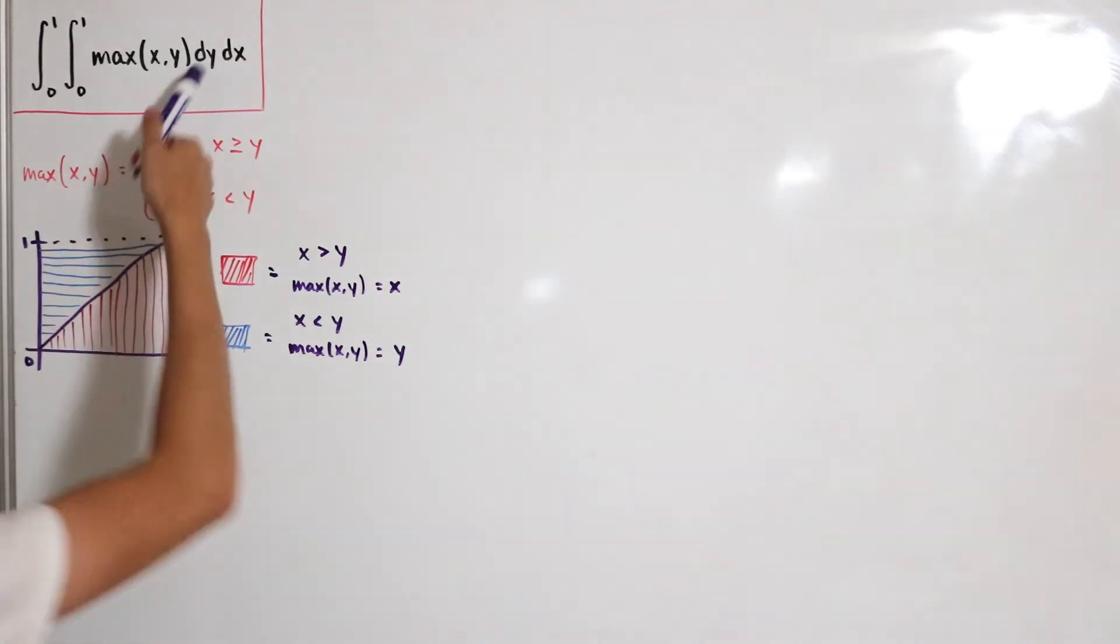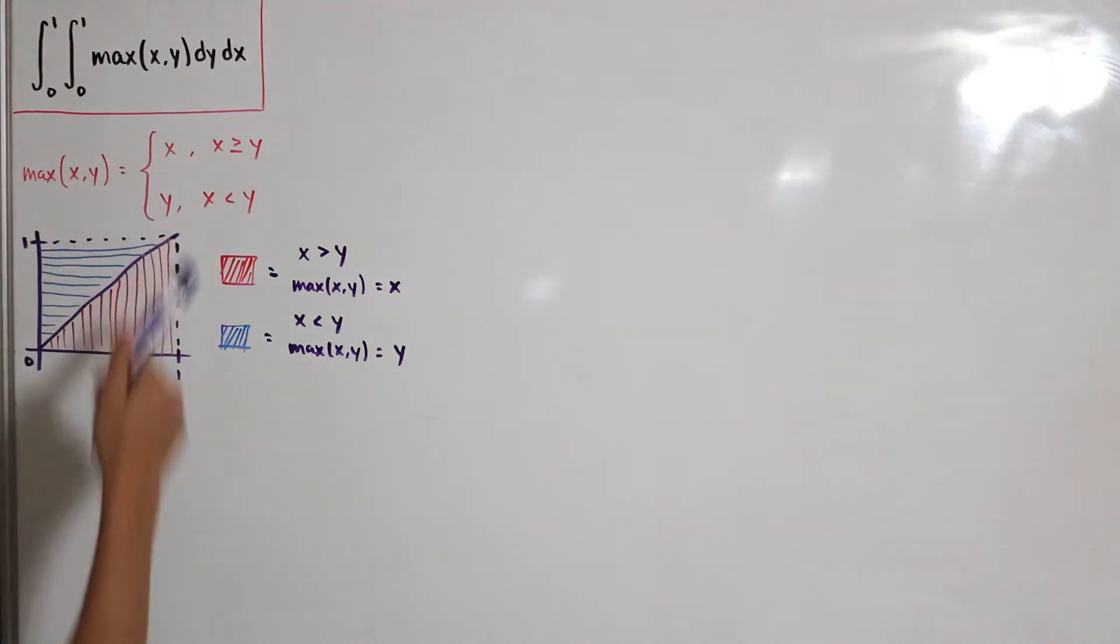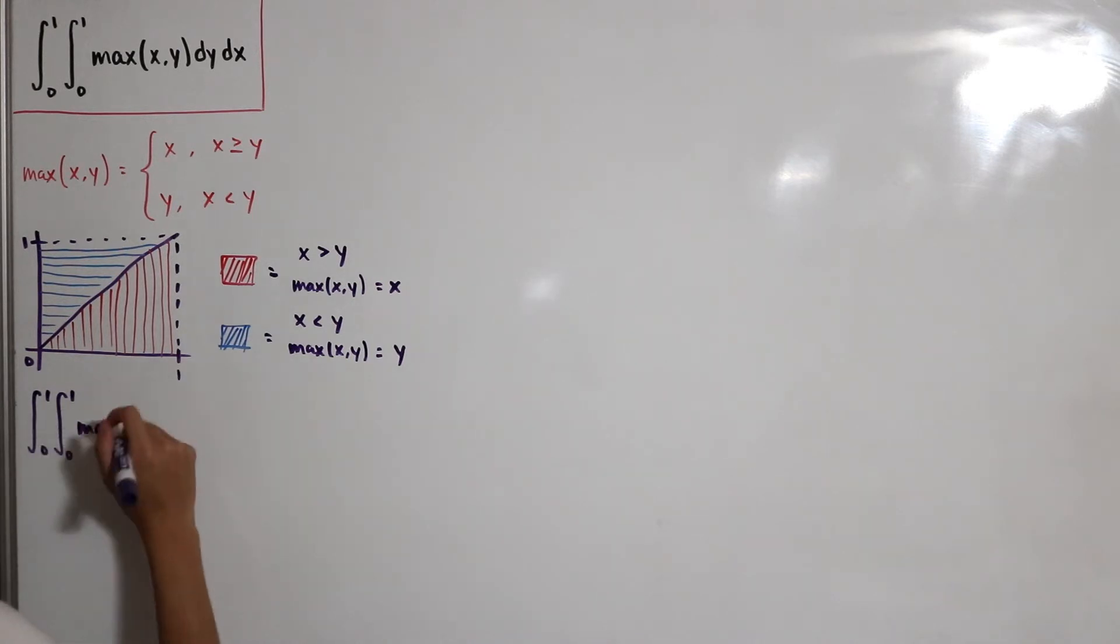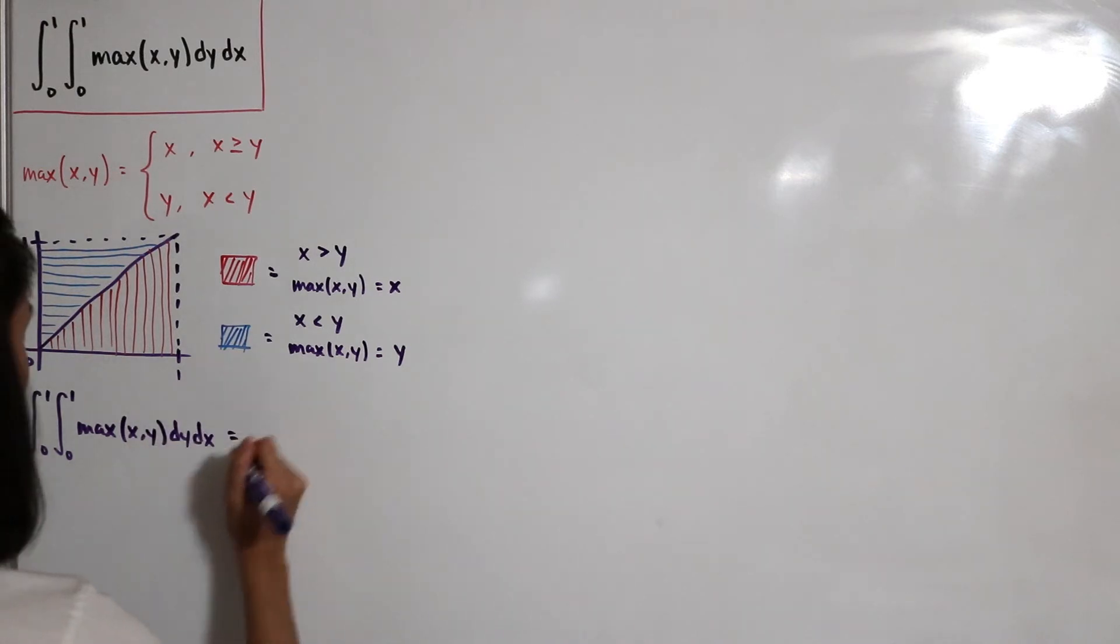We're integrating this in respect to y. Now we can perform the necessary calculations. This is the double integral for our domain from zero to one for both x and y, and we're integrating this in respect to y.